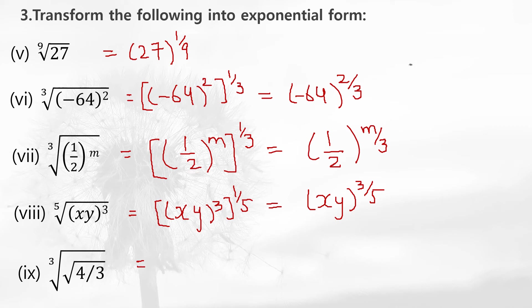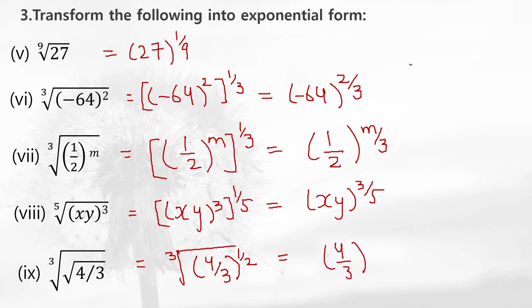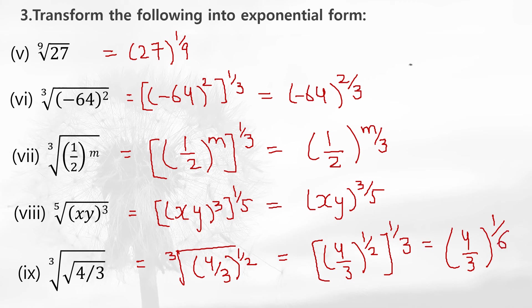Look at the next one — there are two roots here. First you convert the inside root, then convert the outside root. The square root of 4 by 3 means 4 by 3 can be written to the power 1 by 2. Then the outside cube root converts the whole thing to the power 1 by 3. Multiplying the powers: 4 by 3 times 1 by 2 times 1 by 3 gives 4 by 6, which simplifies accordingly.